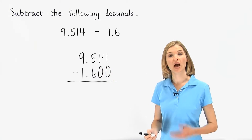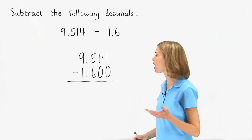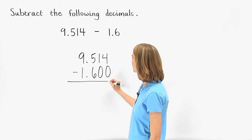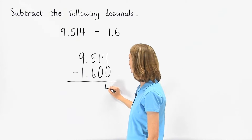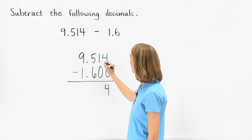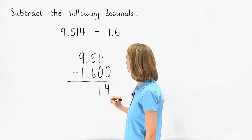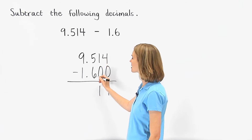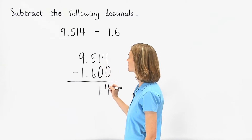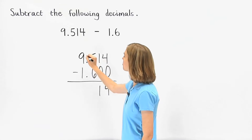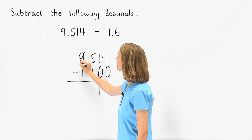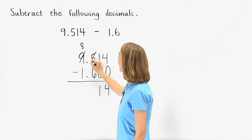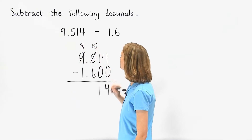Now we simply subtract the numbers by column, starting on the right. Four minus zero is four. One minus zero is one. But notice that we can't subtract six tenths from five tenths, so we borrow one from the units column to get eight units and fifteen tenths.